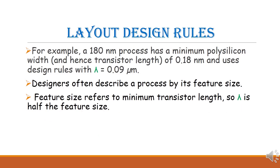For example, consider a 180 nanometer process. This means the channel length is 180 nanometers. Lambda is half the channel length, so lambda equals 180 nm divided by 2, which is 0.09 micrometers. The polysilicon gate width is 0.18 nanometers. Designers often describe the process by its feature size, which refers to the minimum transistor length, so lambda is half the feature size.